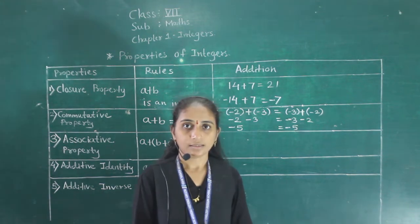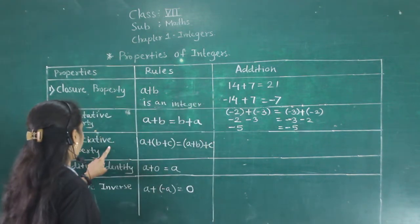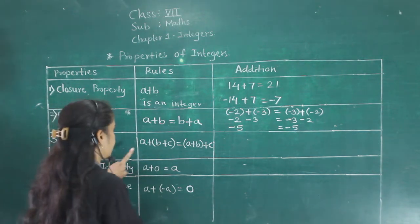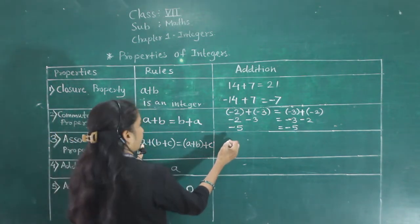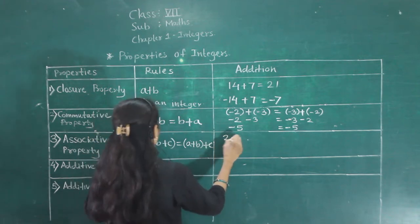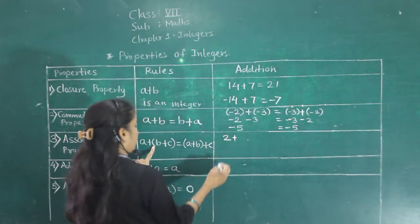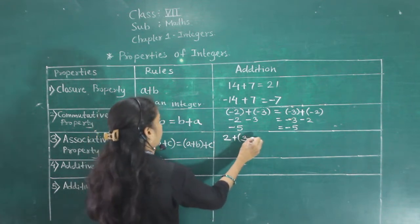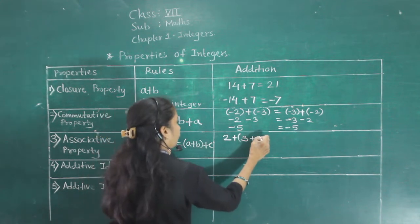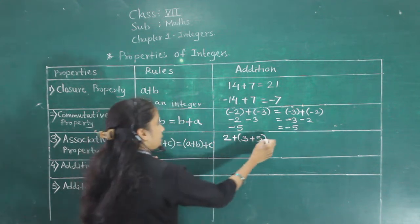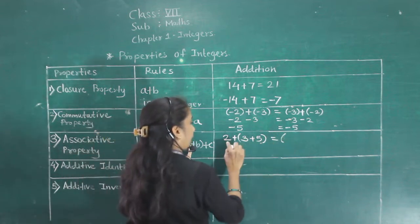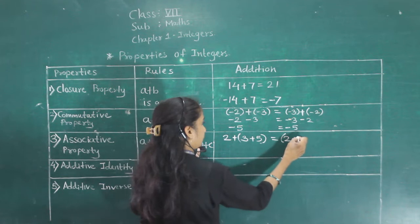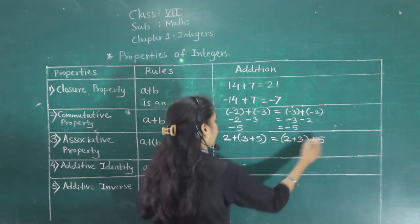Next property: associative property. First we will see it in whole numbers. A is 2, B is 3, and C is 5. We solve the bracket first according to the order of operations.